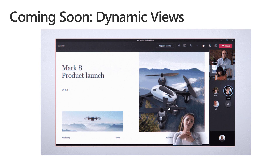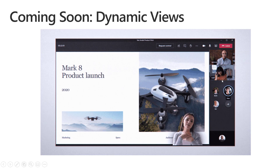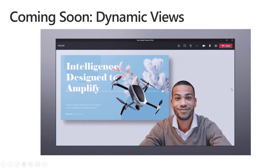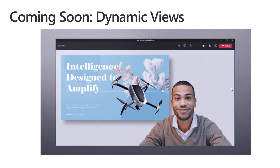Coming soon: Dynamic Views. This is probably one of my favorite features coming by the end of 2020. You can see an overlay of a student — kind of like a weatherman with a green screen. Think about deaf and hard of hearing students and sign language interpreters. You'll be able to pin different people on the right-hand side, maybe the sign language interpreter over the screen. You'll be able to customize different types of views in your Teams meetings, and this will make accessibility really powerful in meeting scenarios.